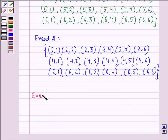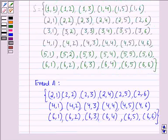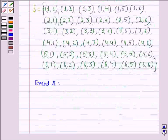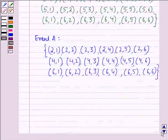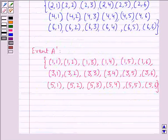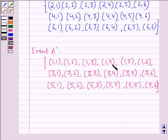Now, for event A', the sample points will be all those points which we get by subtracting event A from the sample space. So, the points are (1,1), (1,2), (1,3), (1,4) through (1,6), (3,1), (3,2) through (3,6), and (5,1), (5,2) through (5,6). So, this is the sample space for event A', and we see that this will be equal to event B, that is getting an odd number on the first die.